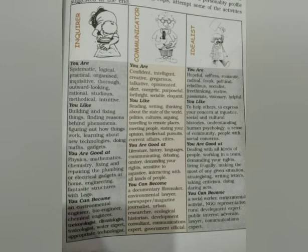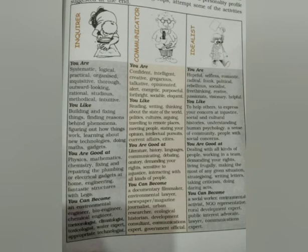If you are an inquirer, you are good at physics, mathematics, chemistry, fixing and repairing plumbing — the water pipes in your house — or electrical gadgets at home, engineering, and building fantastic structures with Lego — Lego is a building blocks game. If you are an inquirer, you can become an environmental engineer, bioengineer, chemical engineer, meteorologist, climatologist, toxicologist, water expert, or appropriate technologist. There are many new words here — please find out the meanings using a dictionary and write them down.